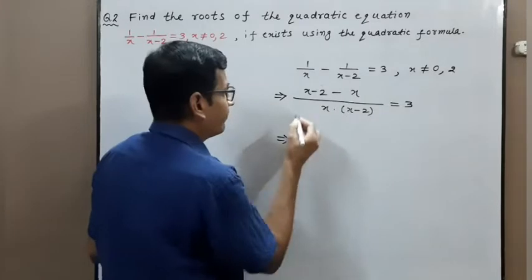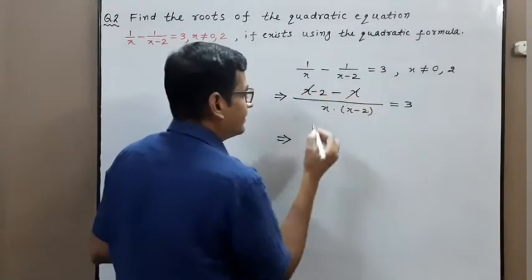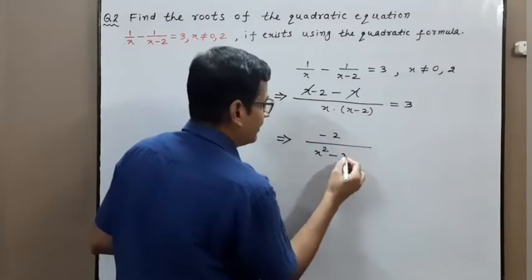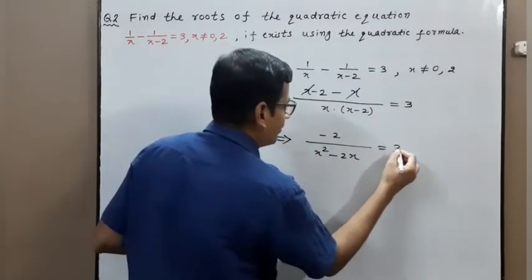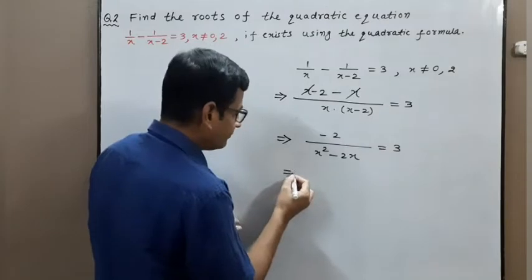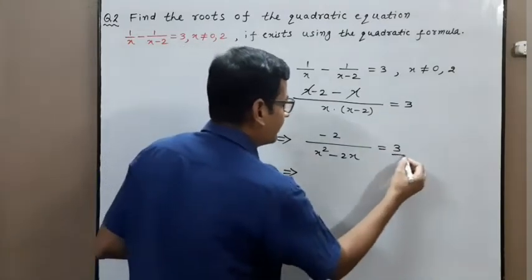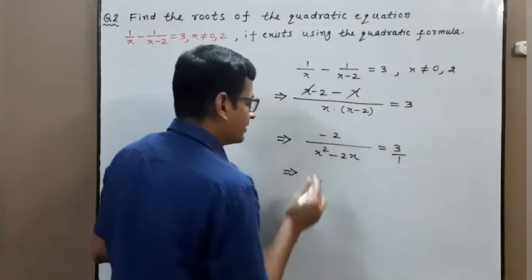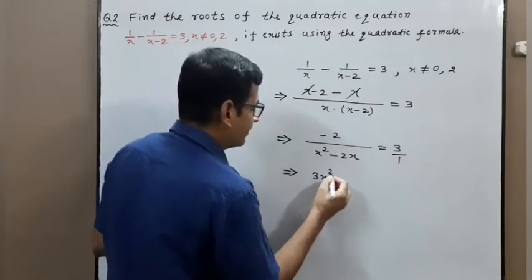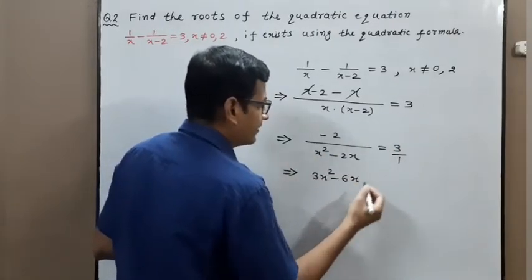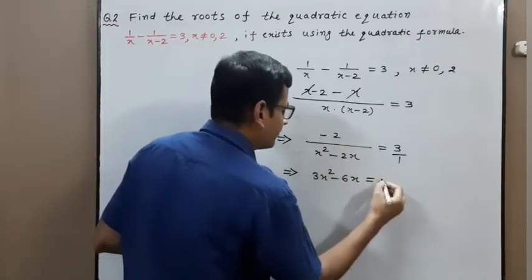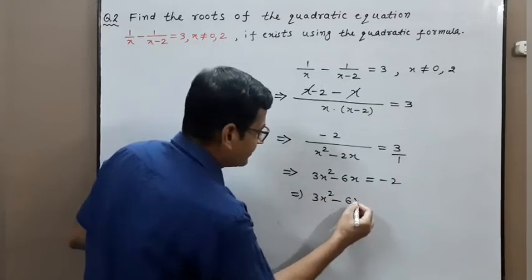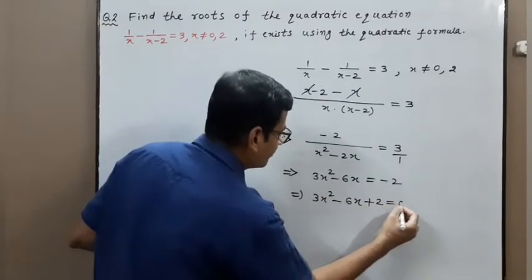After simplifying, the numerator becomes x minus 2 minus x, and the denominator is x squared minus 2x, equal to 3. Cross-multiplying gives 3 into x squared minus 2x equal to minus 2, which simplifies to 3x squared minus 6x plus 2 equal to 0.